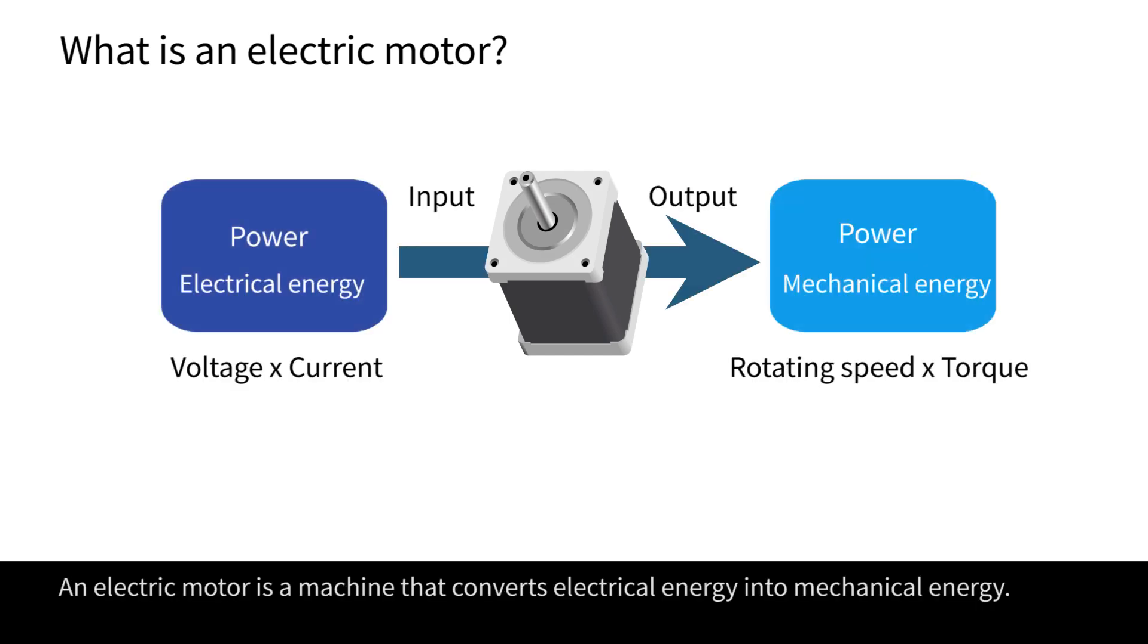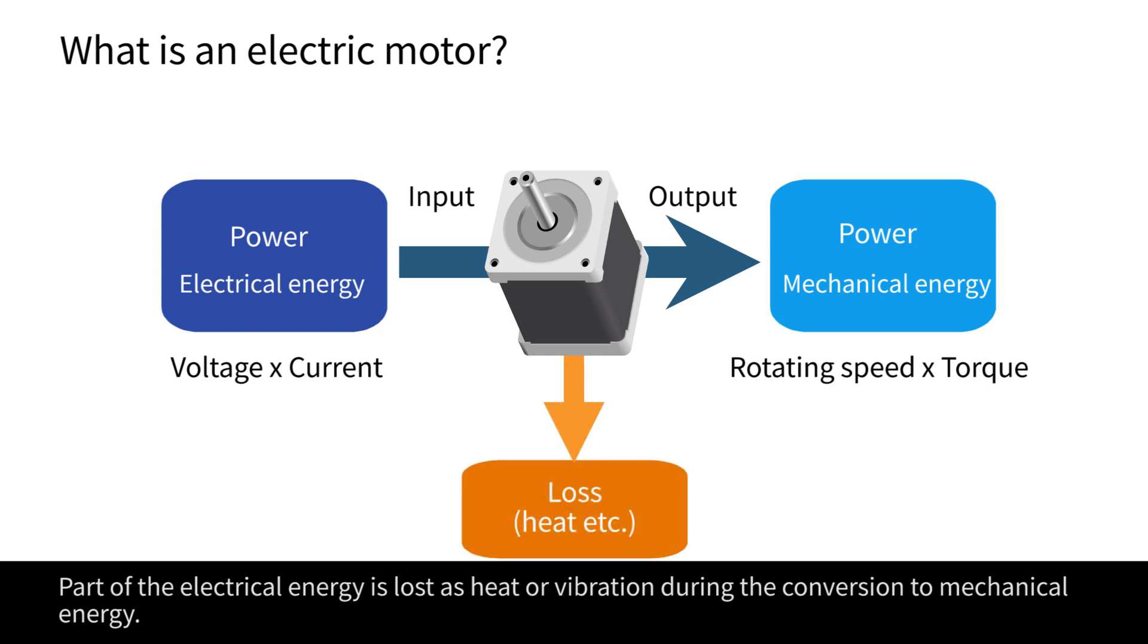An electric motor is a machine that converts electrical energy into mechanical energy. Getting strong mechanical power requires high electrical power. Part of the electrical energy is lost as heat or vibration during the conversion to mechanical energy.